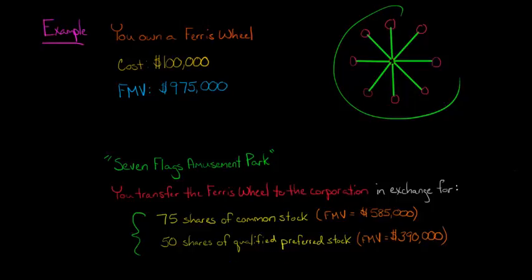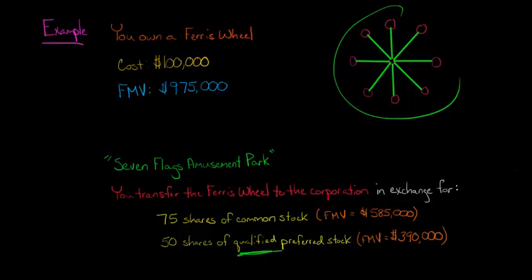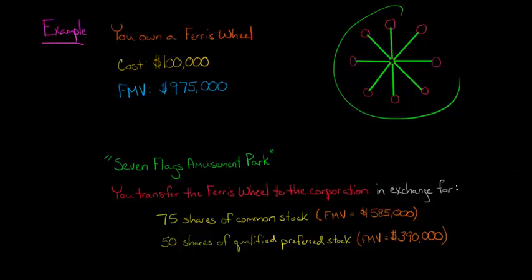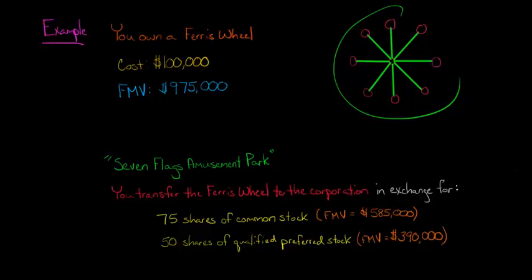Both classes are going to be qualified stock. As we've talked about before, non-qualified stocks such as mandatorily redeemable preferred stock could be considered boot — but that's not what we're talking about here. We're talking about two classes of qualified stock. So you're going to receive 75 shares of common stock and also 50 shares of qualified preferred stock. We need to know the fair market value of each class: the common stock has a fair market value of $585,000, and the qualified preferred stock has a fair market value of $390,000. If you add these up, they total $975,000 — which is the fair market value of the Ferris wheel, so that makes sense.